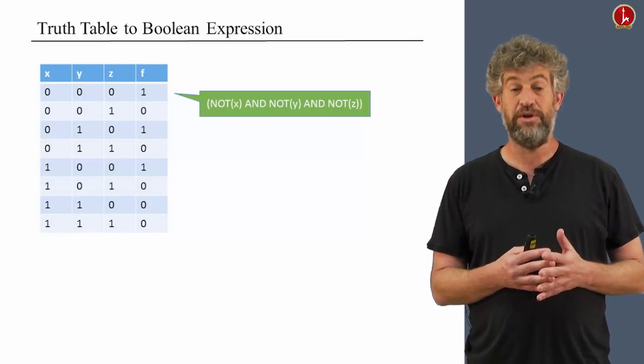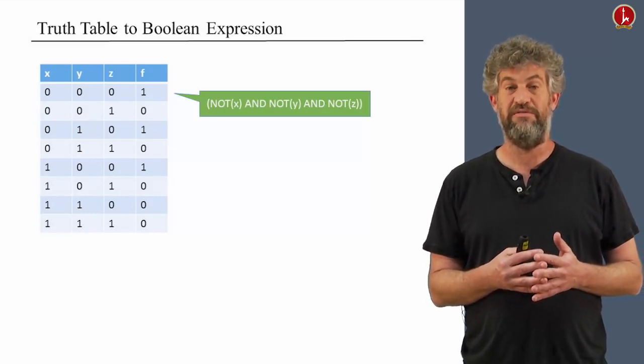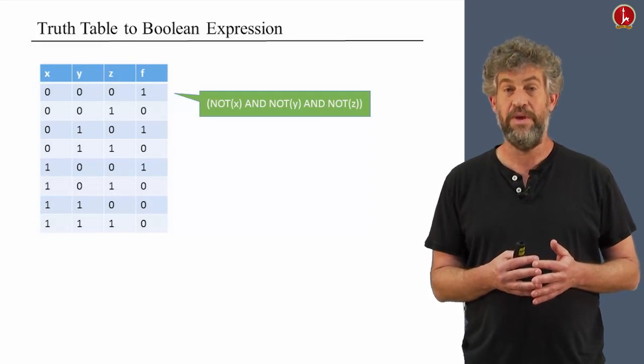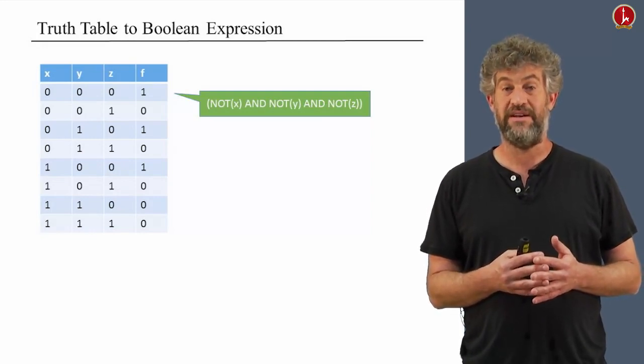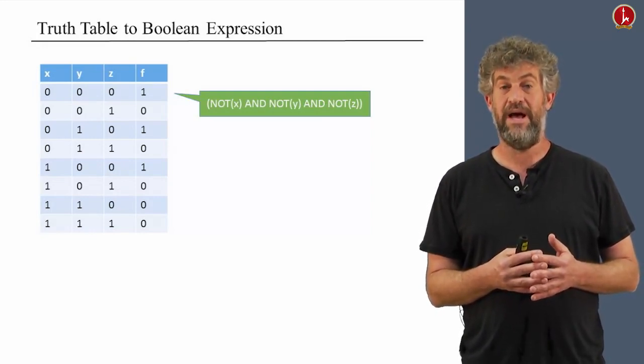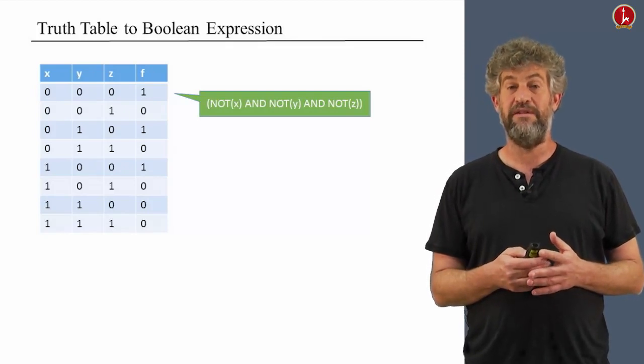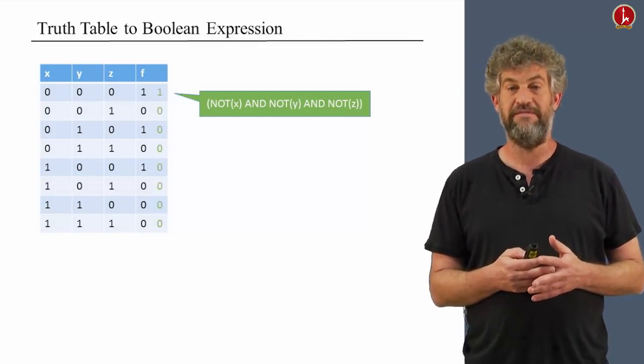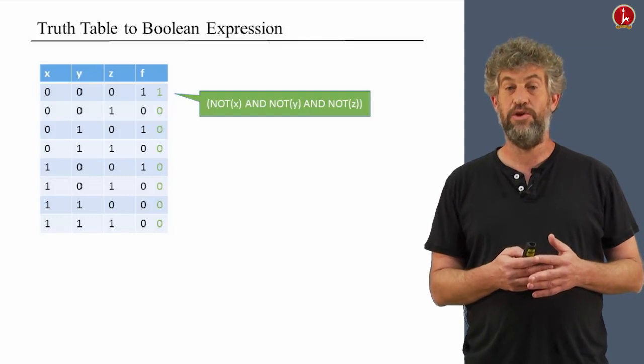For example, in particular, since here in this row, the values of x, y, and z are 0, 0, and 0, if we look at the expression, not x and not y and not z, that is going to be a Boolean function, the green Boolean function, that only gets a value 1 on this row.